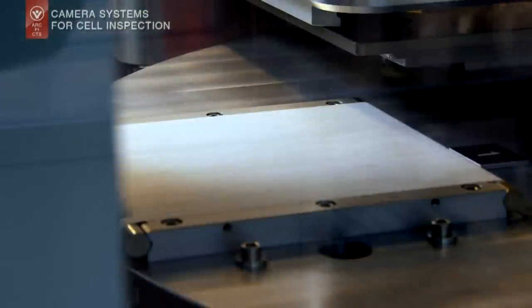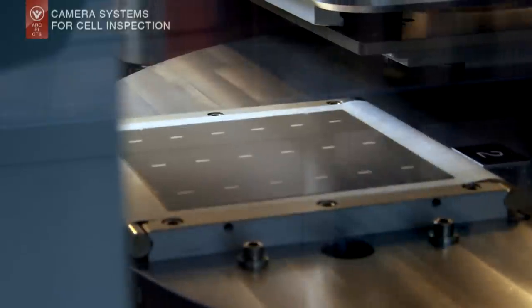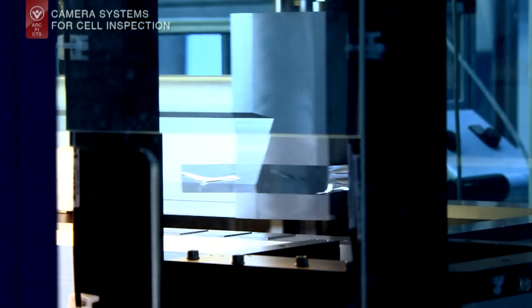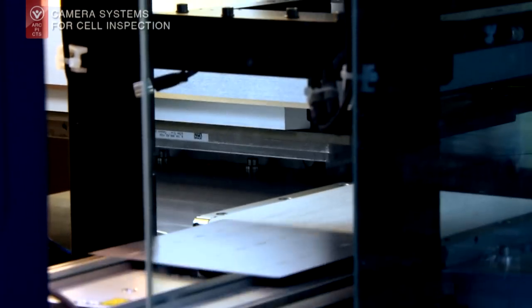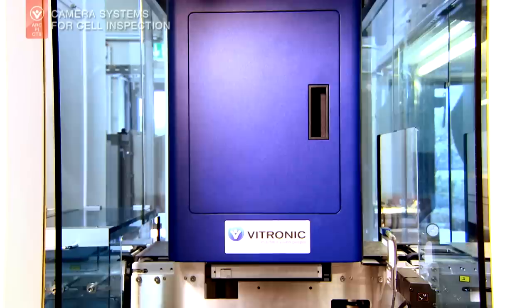When inspecting the imprint on the back, Vitronic uses a matrix camera and special illumination technology to detect the wafer edges and print contours as well as three-dimensional deformities such as bubbles and occlusions.